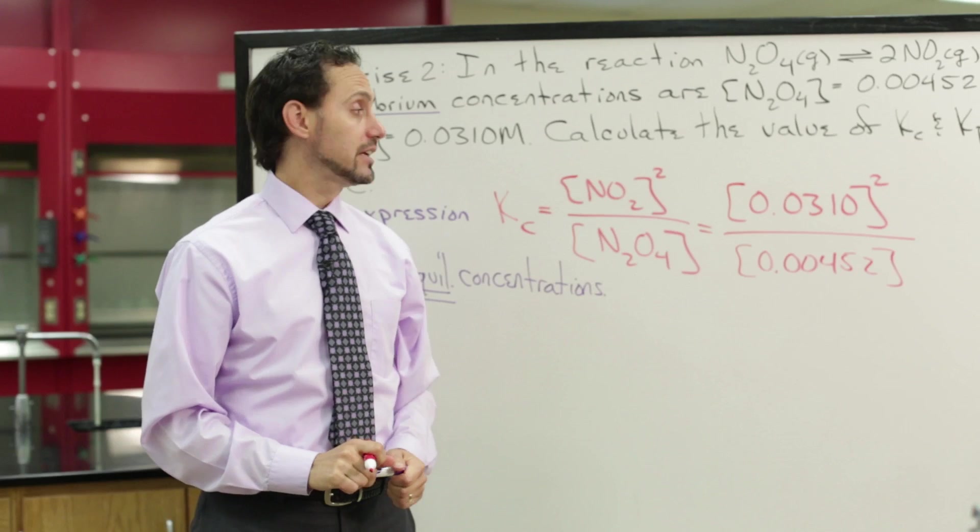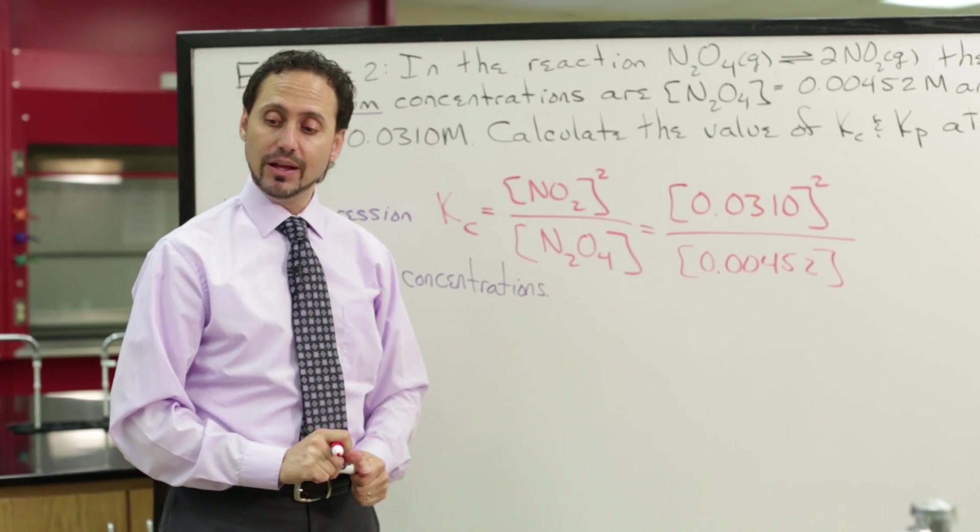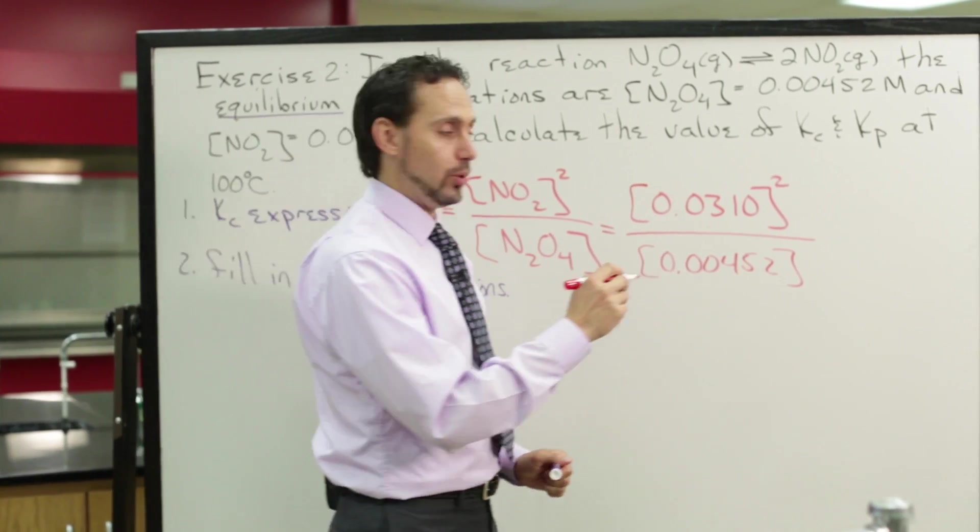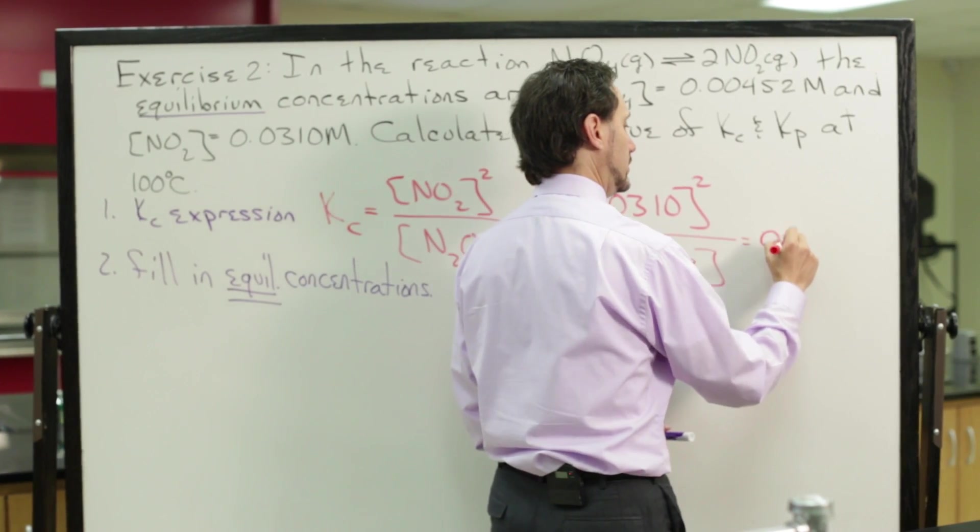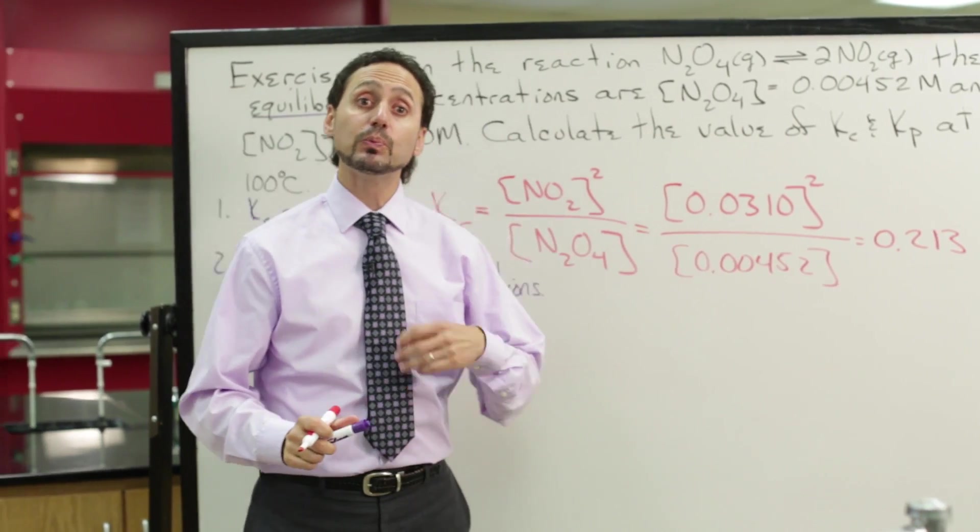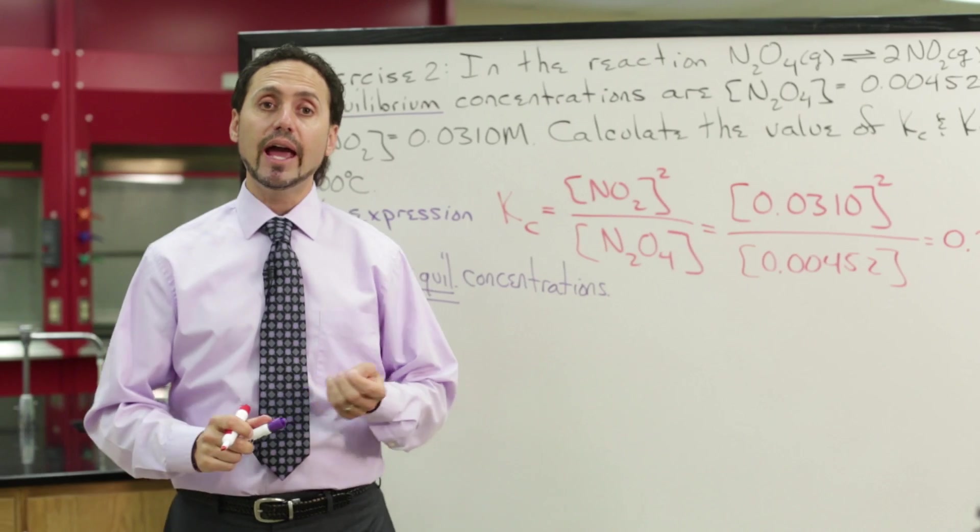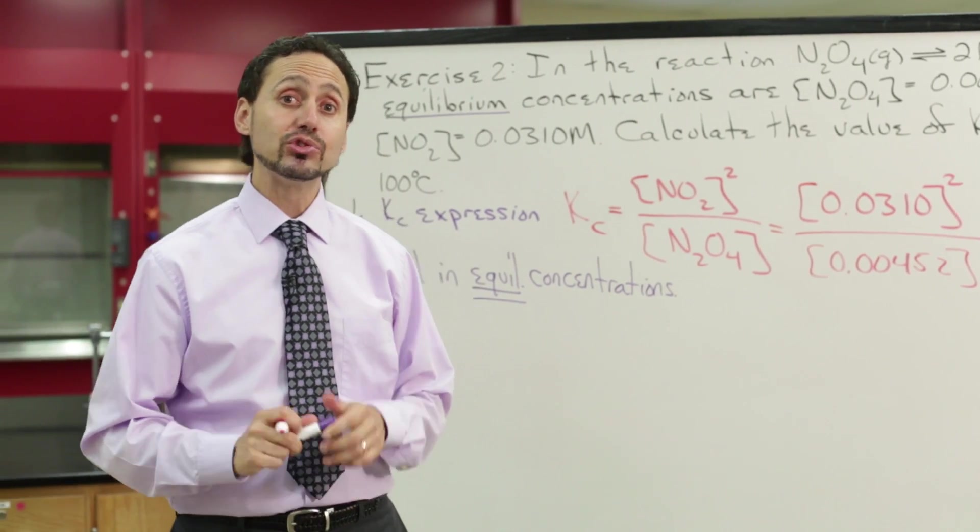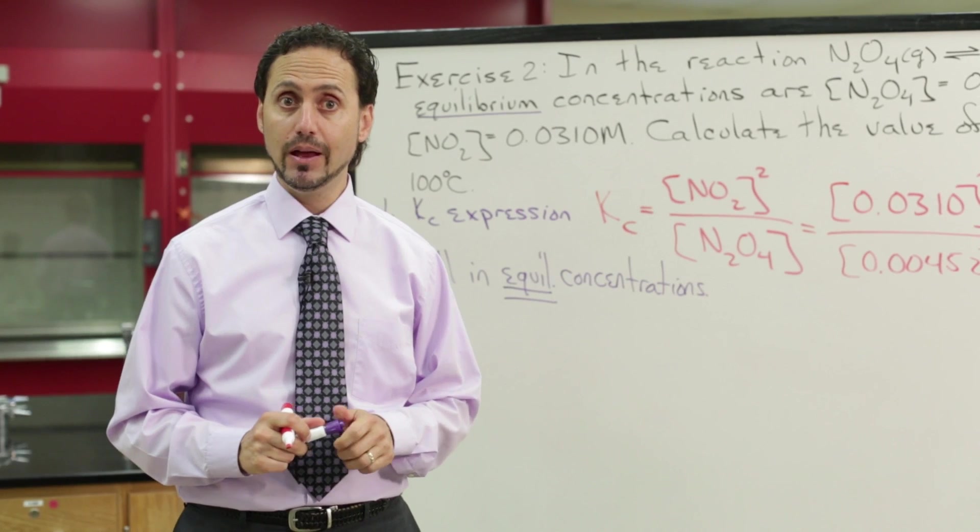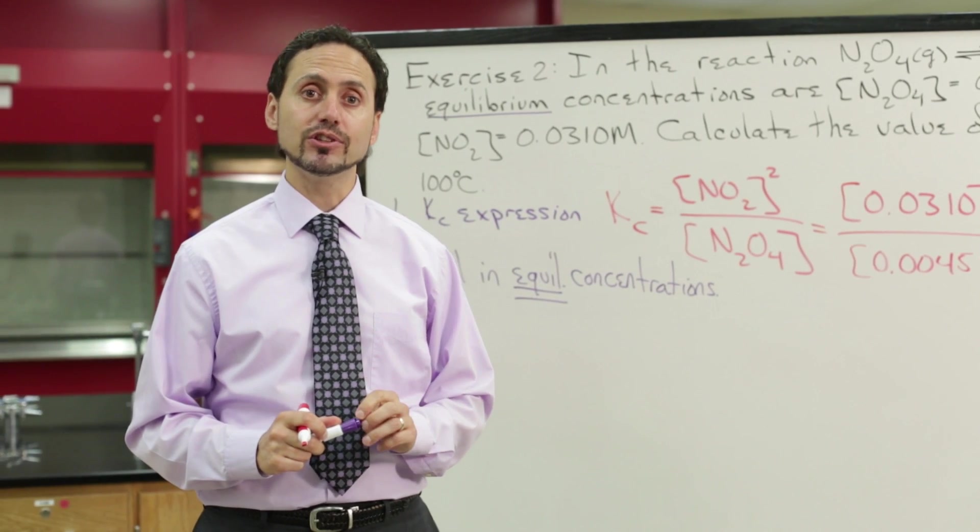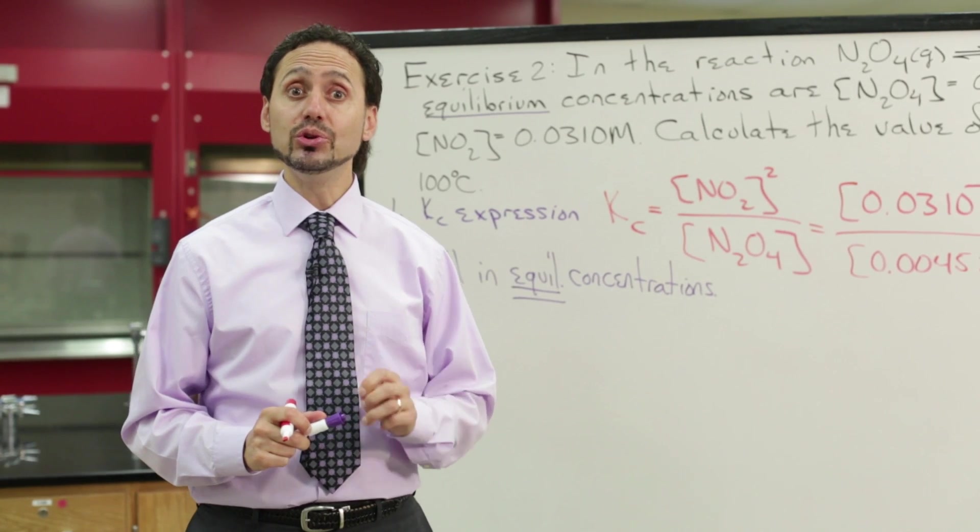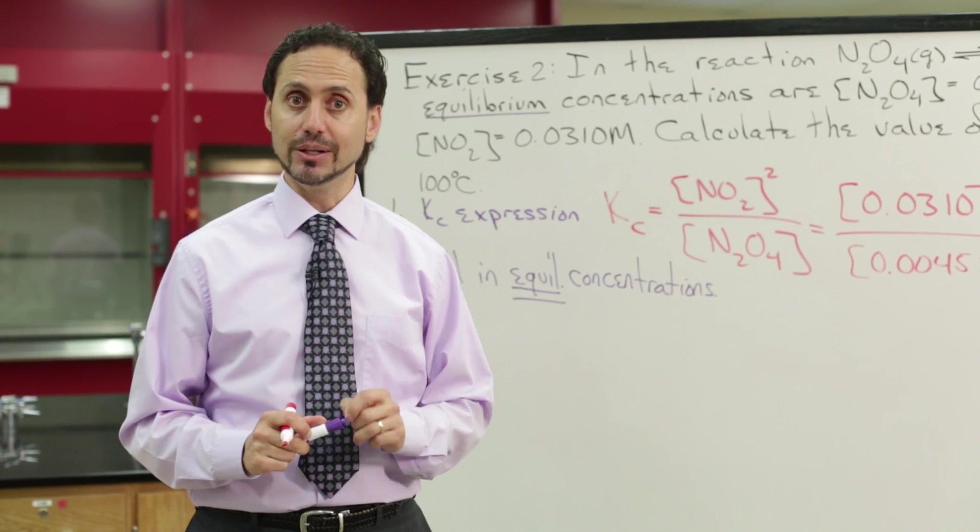Now you need to get out your calculators and run this calculation, and the answer you get should be 0.213. Now I know in previous lessons, and your chemistry instructors have probably drilled into you that you always include units with your calculations. But for equilibrium constants, this is the one situation where you do not have units with your number.